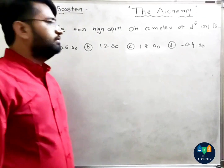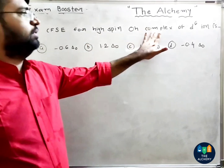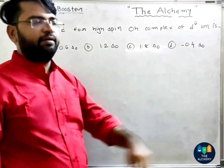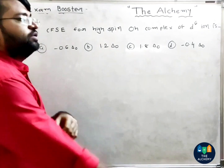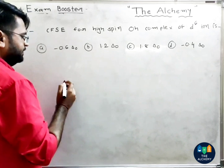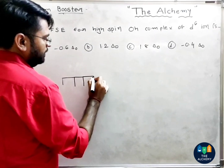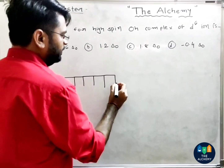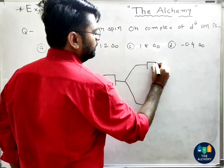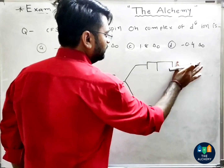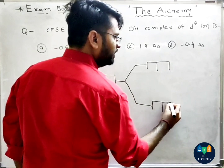The next question asks for the CFSE of a high spin octahedral complex of a d7 ion. We need to split the d orbitals into T2G and EG subsets. The total crystal field splitting is 10Dq. In an octahedral field, T2G is lower and EG is higher in energy.